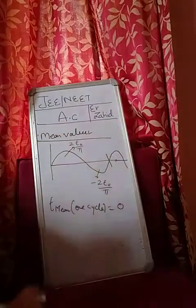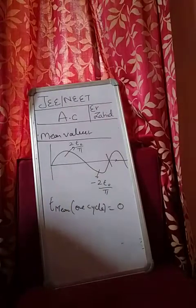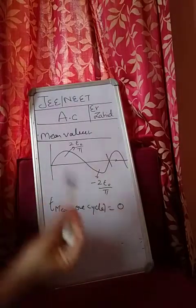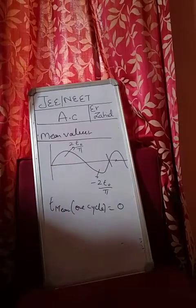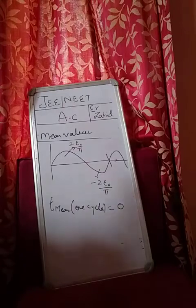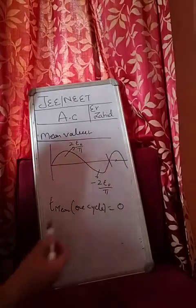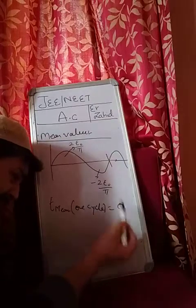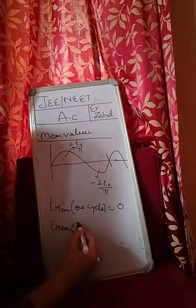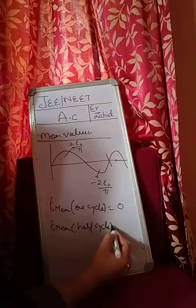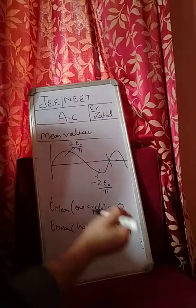Therefore, if you connect a DC voltmeter or DC ammeter with AC, the needle will remain at zero reading. Those ammeters or voltmeters cannot be used to measure the AC. Mean value of AC, so E mean for one cycle is zero. Therefore we define E mean only for half cycle, and for half cycle it is twice E naught by pi.